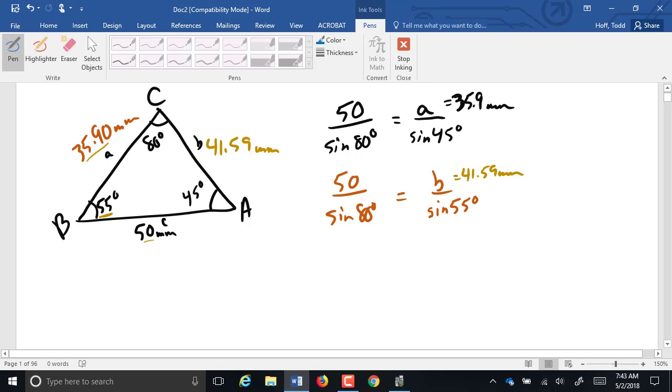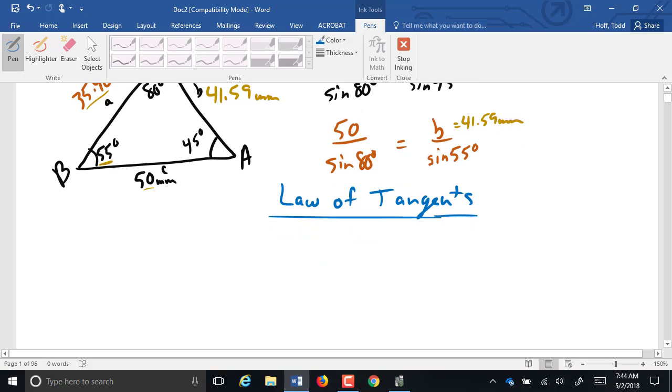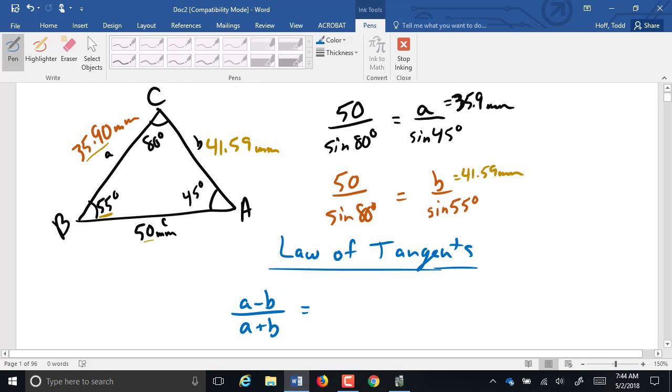Somebody asked me a few weeks ago, is there a law of tangents? Yes, there is. The law of tangents is the difference between two sides A and B over the sum of two sides equals the tangent of one-half of angle A minus angle B over the tangent of one-half of angle A plus angle B.